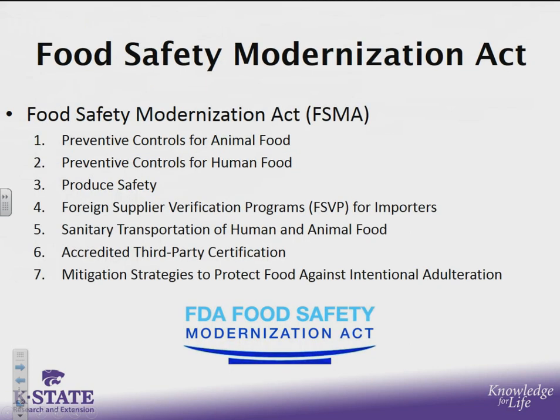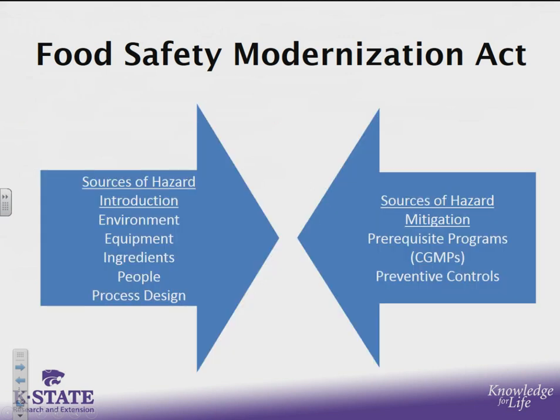When we think about the Food Safety Modernization Act, or FSMA, we understand that there are a variety of different types of rules associated with it, and specifically mycotoxins can have impacts in a number of these different rules. We're primarily going to be focusing on animal and human food today. The premise of the rule is to first identify sources of where hazards could be introduced — for example, from the environment, from the equipment, from ingredients, people, or even process design. The second part of FSMA is to identify potential mitigation points for those hazards to allow us to prevent them from occurring in the first place.